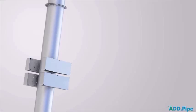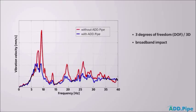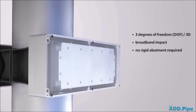Thus ADD pipe offers quite a number of advantages. It acts in one, two or three directions, has broadband effect, thus controls both low frequent and high frequent vibrations, and it does not require any rigid abutment, which means that it can be directly attached to the piping system, at the position in which is suited best.